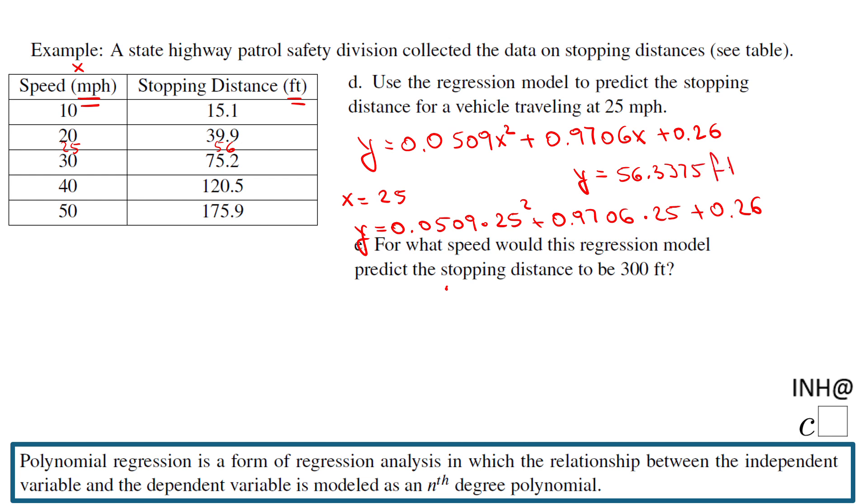Okay, so on the next part, let me erase here and write it again somewhere else. So we end up here y equals, like I said, 56.3375 feet. Okay, and on the last part of this problem, you need to find a speed. Will this regression model predict if the stopping distance is 300 feet? So if you have 300 feet here, if the y is 300, how much is x?